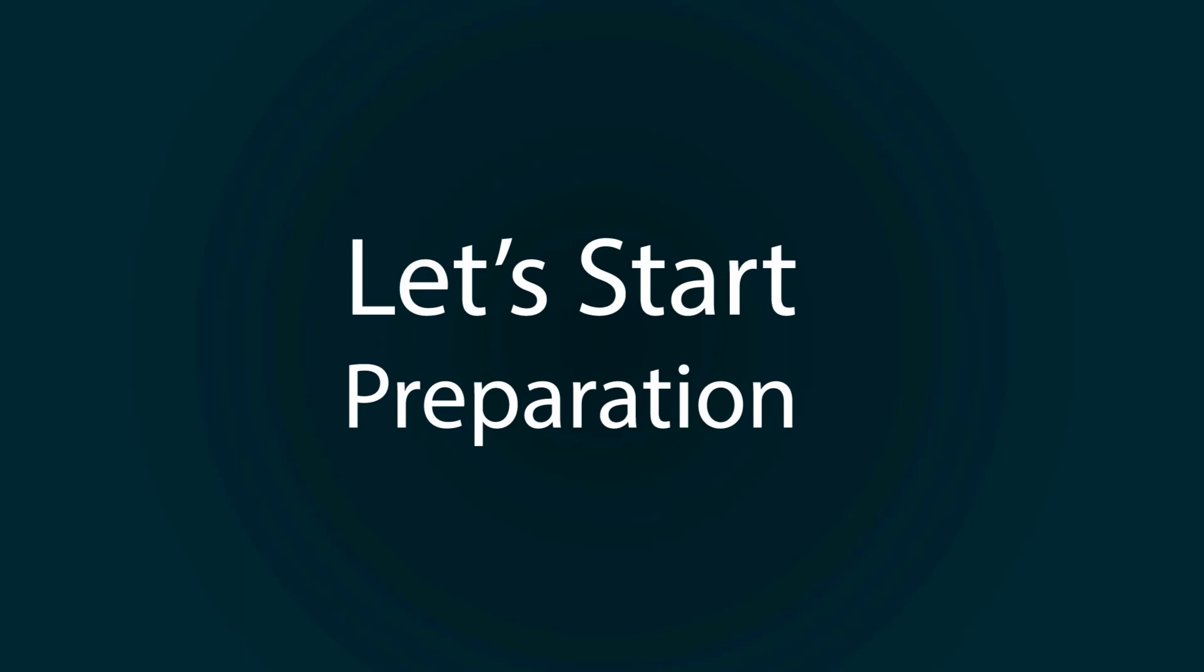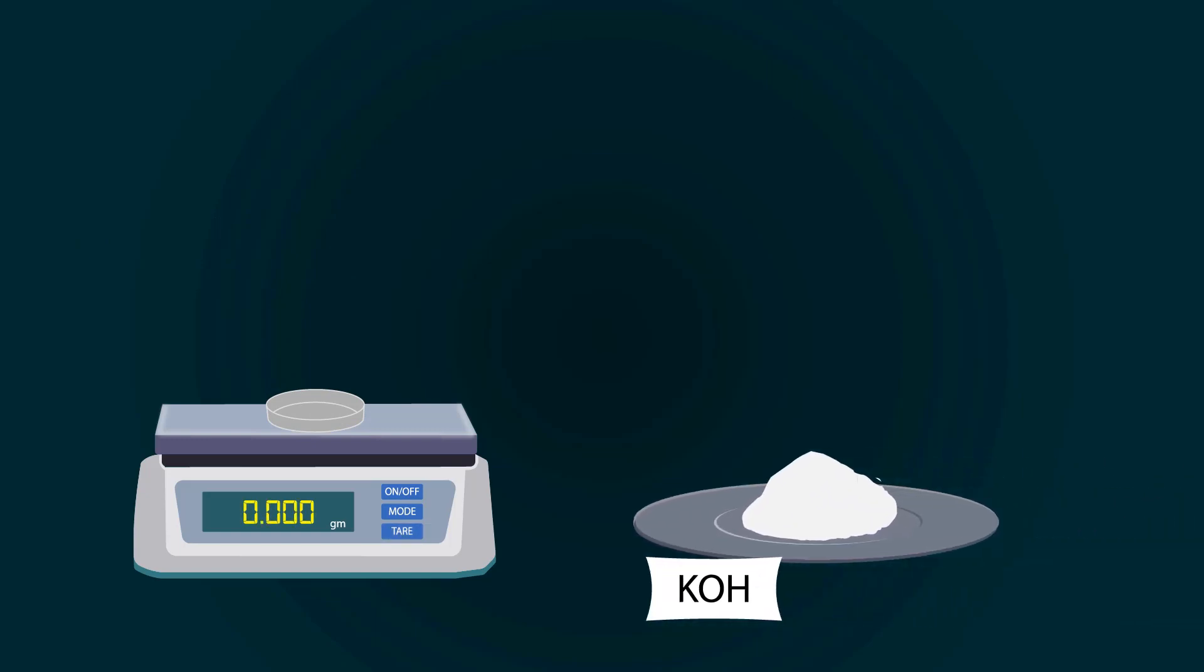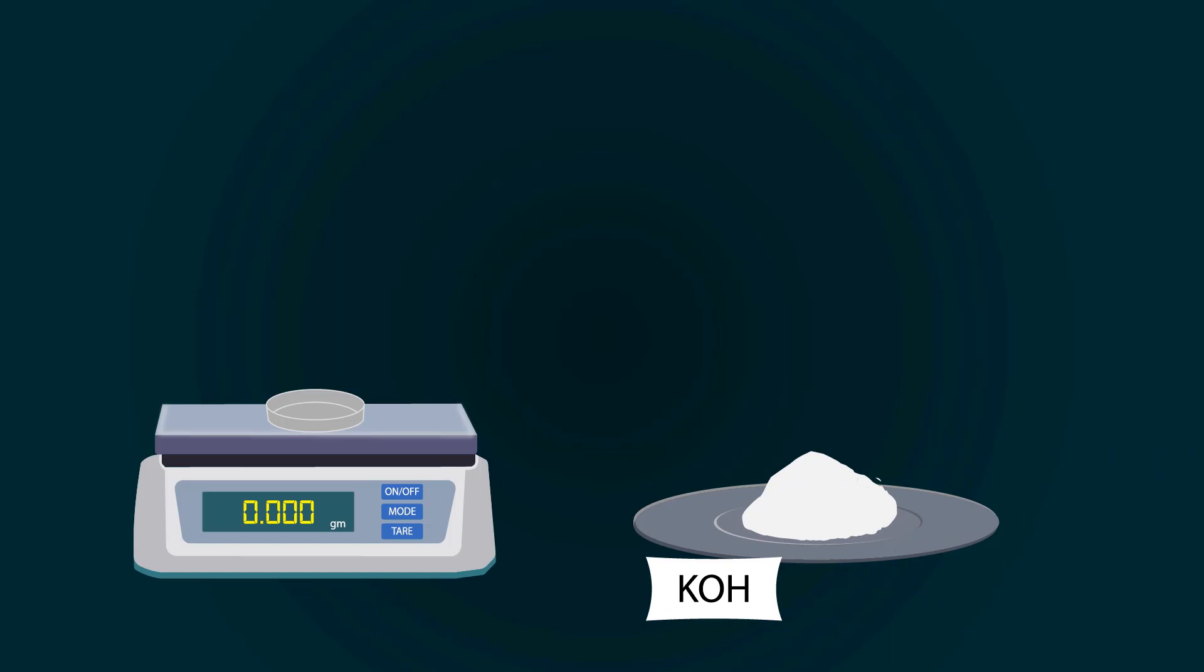Let's start preparation. First of all, take a weight balance and power it on. Now, put petri dish on it. Don't forget to tare it down. Now, start adding potassium hydroxide into the petri dish with the help of spatula. Weigh precisely up to 11.2 grams.